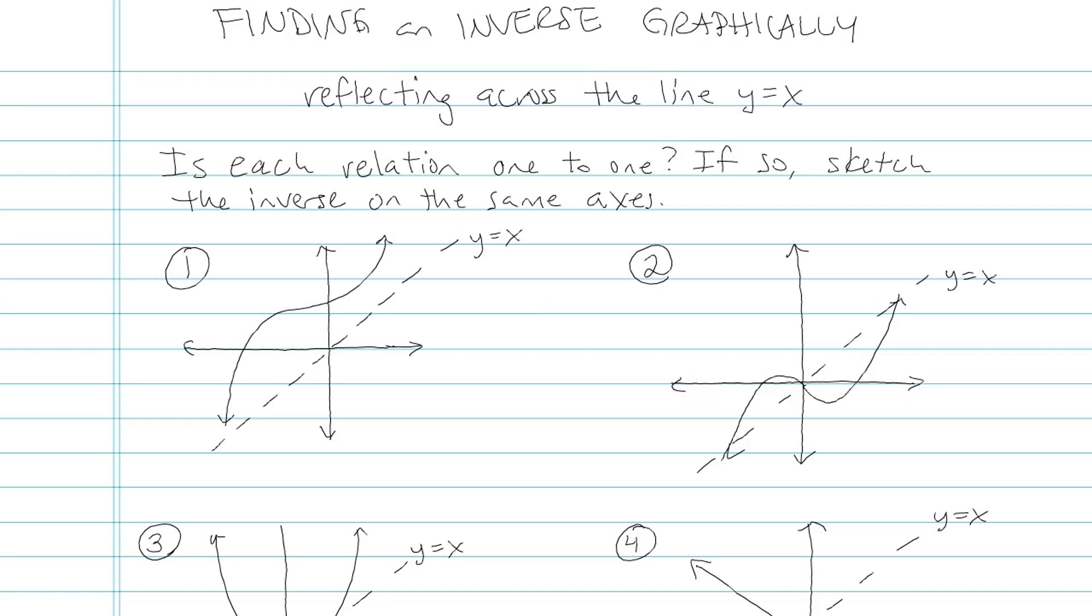The way you find an inverse graphically is by reflecting it across the line y equals x. And for each one of these examples, I've drawn that line in. It's the diagonal line that goes to the origin and has a slope of 1.